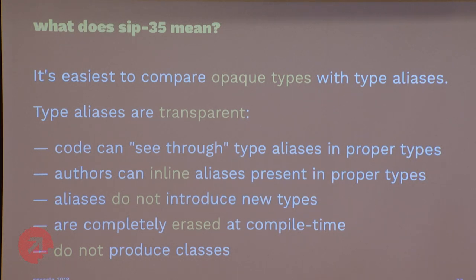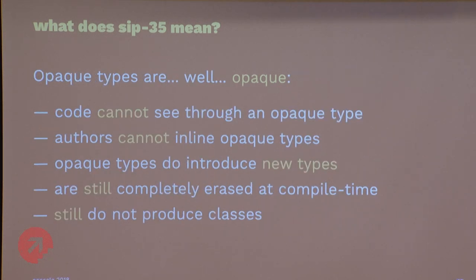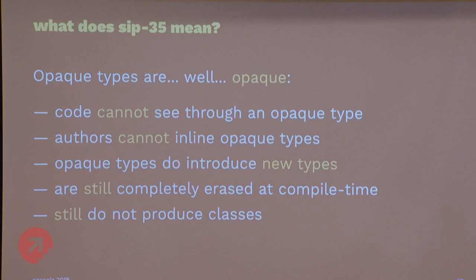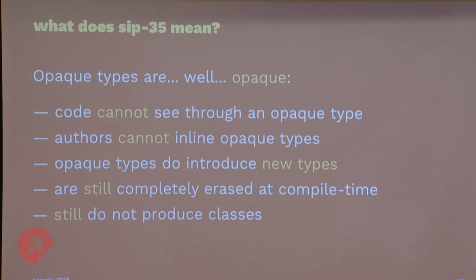Comparing opaque types to type aliases: type aliases are transparent — you and the compiler can see through them, switch them back and forth, they don't introduce new types and are completely erased. Opaque types are not transparent — they're opaque, that's in the name. You can't interchange Long and UID if it's an opaque type. Third-party authors can't inline the opaque type even if they secretly know the implementation. But opaque types do introduce new types that exist at compile time, with different constraints. They are still completely erased at runtime — they don't produce classes and don't exist at runtime.